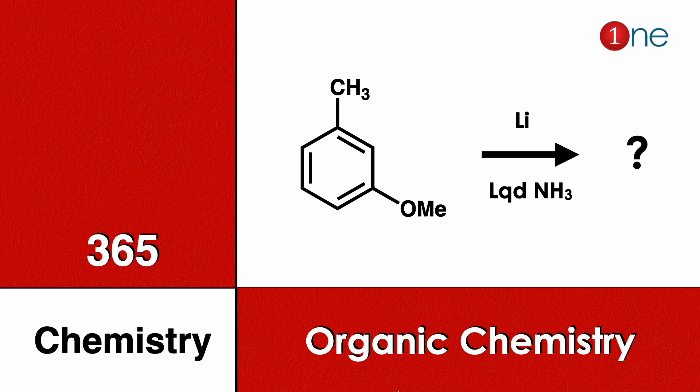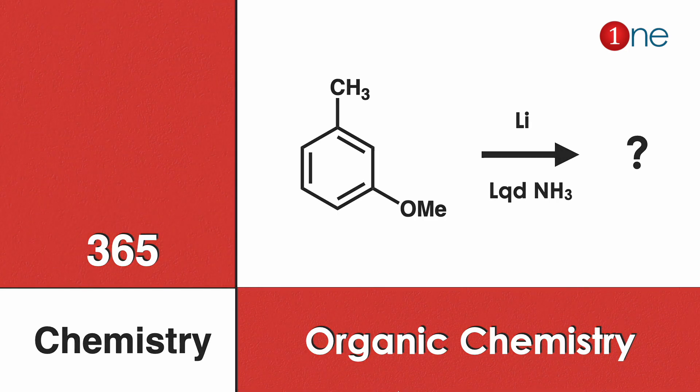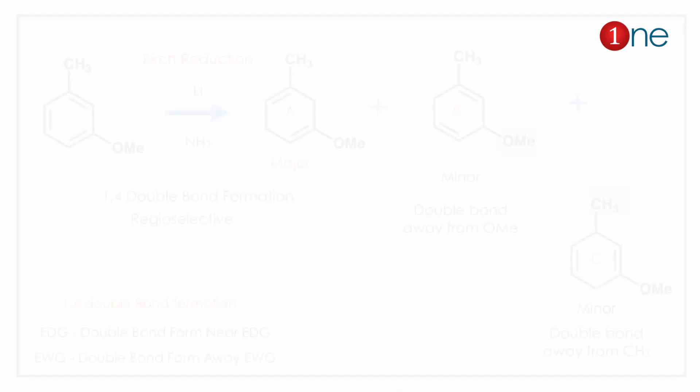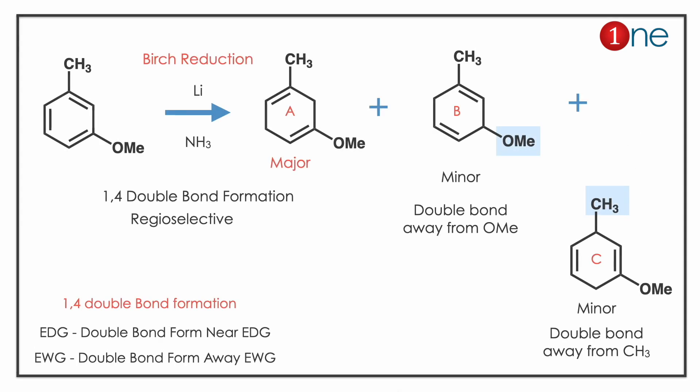Welcome to One Chemistry — this is the 365 Chemistry Series for organic chemistry questions. Here you have an arene with a meta-position methyl group reacting with lithium and liquid ammonia. You need to find what the final product will be.